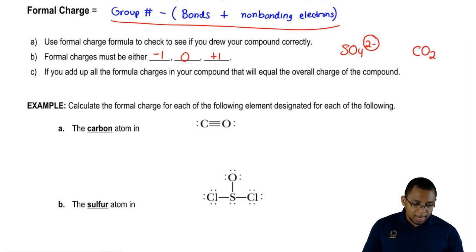Let's say you have to draw CO2, carbon dioxide. When you take the formal charges of the two oxygens and the carbon, it should add up to 0. If it doesn't, you drew it incorrectly. That's the beauty of formal charge.